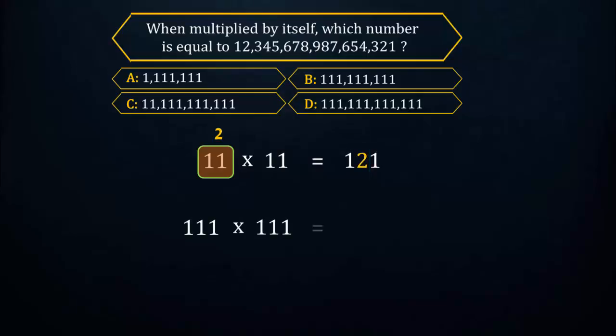Similarly, when 111 is multiplied by itself, it gives a result as 12,321. This number has three ones, so the result has numerals counting up to three, then counting in reverse back to one.